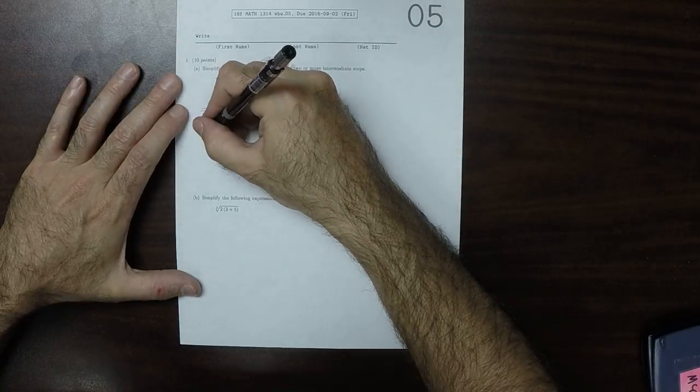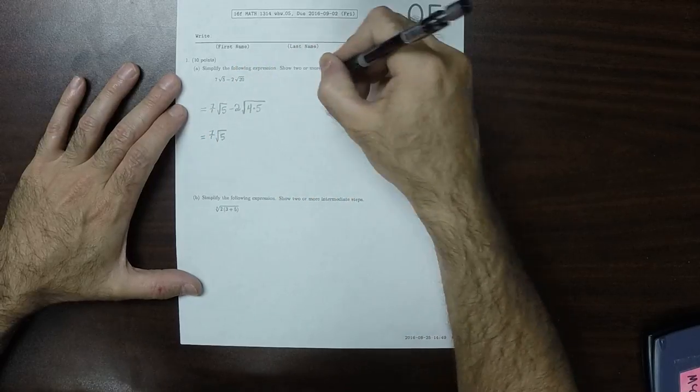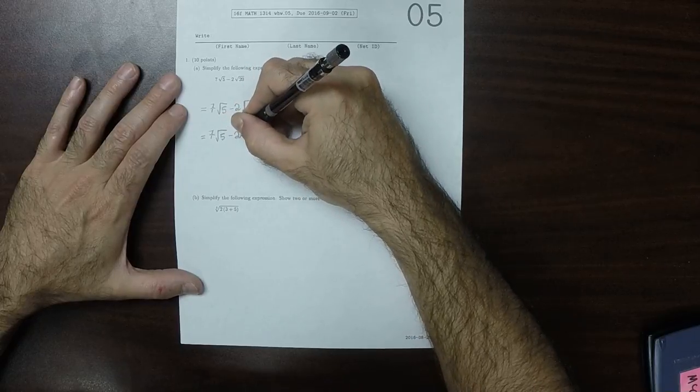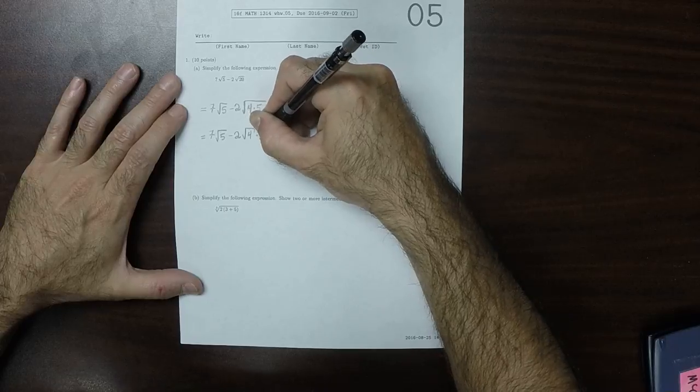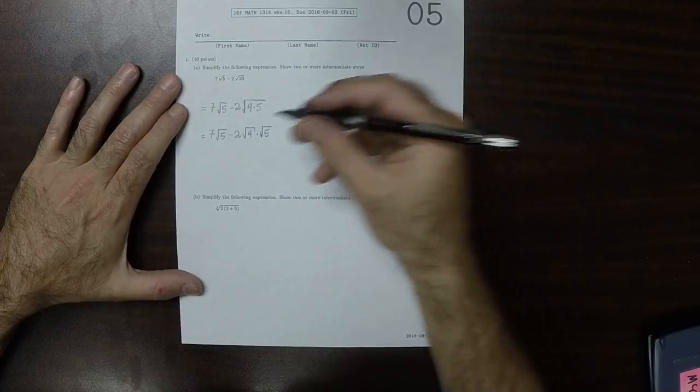Then the square root distributes to the factors. And this would be minus 2 and then square root 4 times square root 5. Square root of 4 is 2.